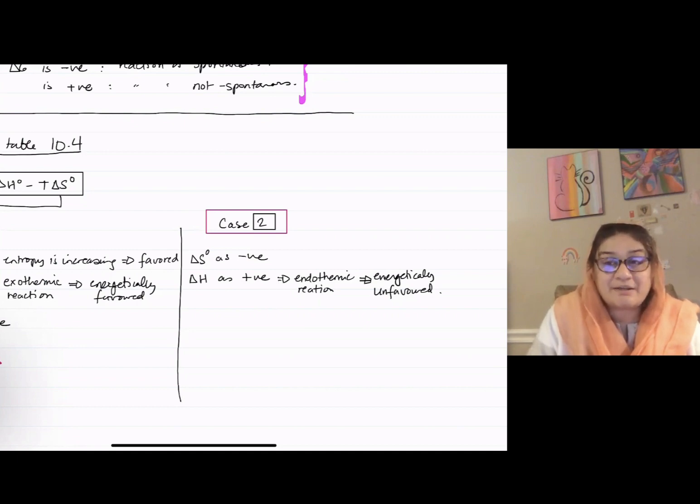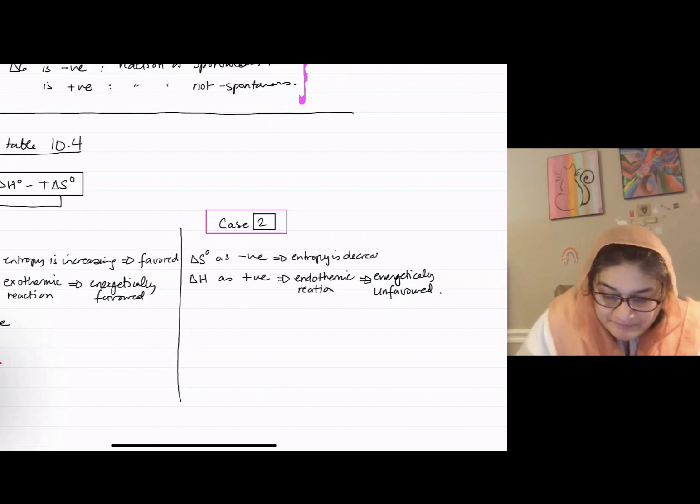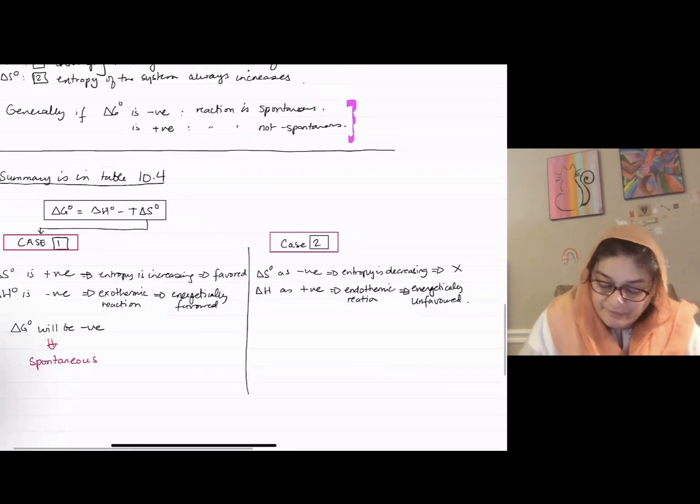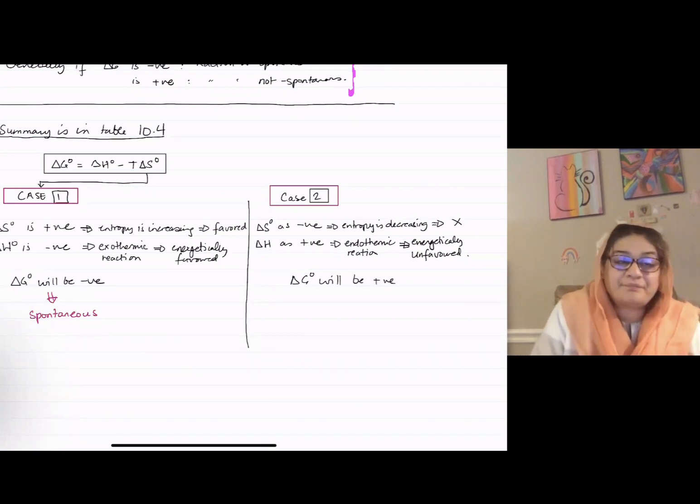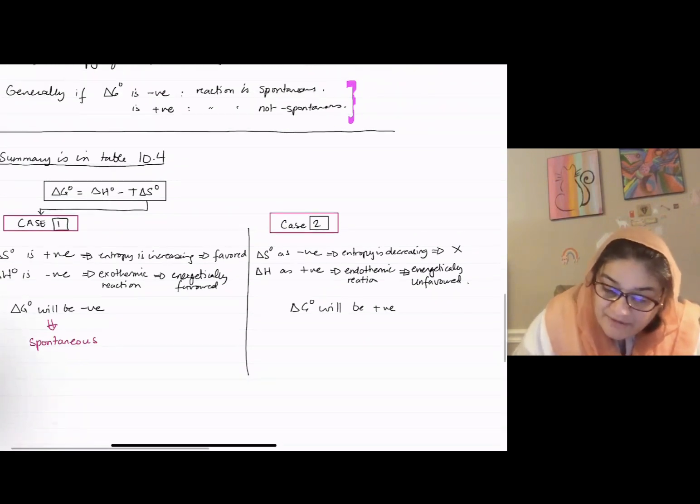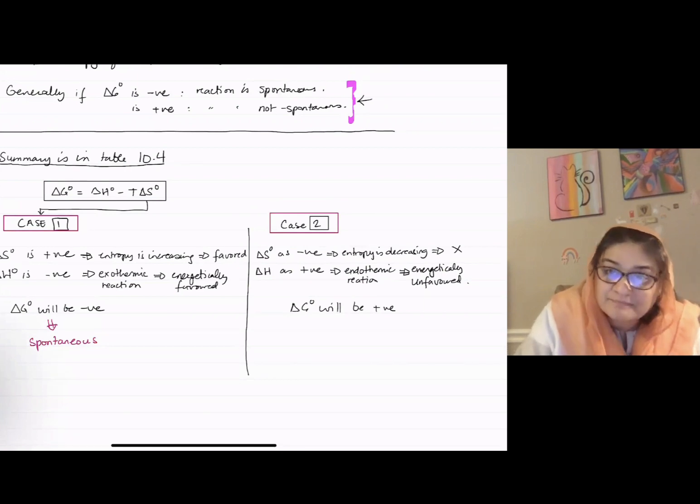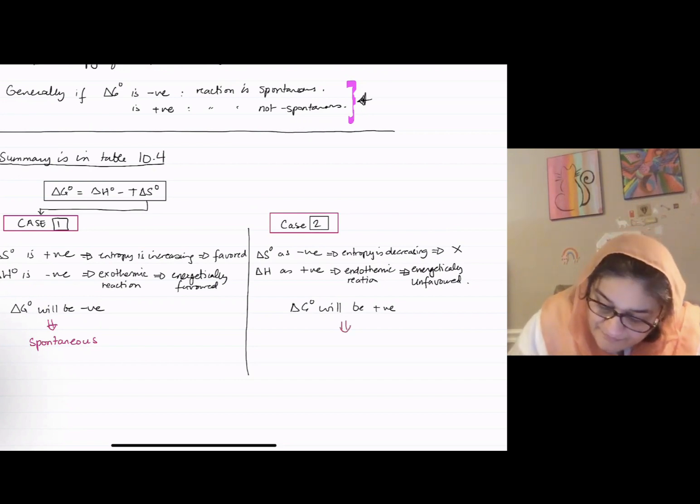If ΔS is negative, what does that mean? Entropy is decreasing. Can that happen? Nope. So overall, ΔG° will be positive, which implies if ΔG is positive, not spontaneous. Not spontaneous.